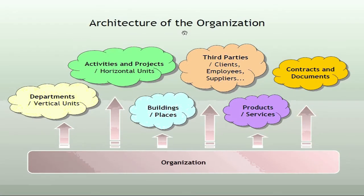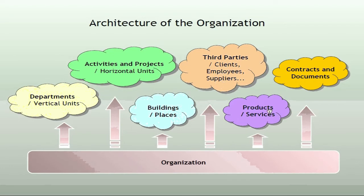Finally, there are very important settings for the architecture of the organization, whose natural definition is also in this module. Concerning the architecture of the organization, it is important to define the following points when implementing our solutions: types of departments, which are vertical organization units; types of activities and similar processes, which are horizontal organization units; types of buildings and locations; types of third parties; classes of products, services, and types of contracts.